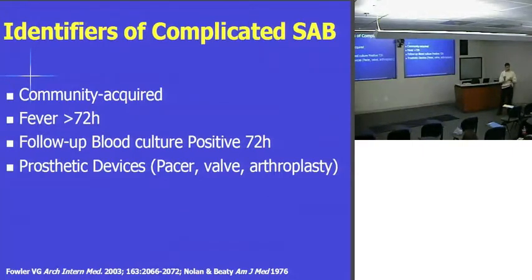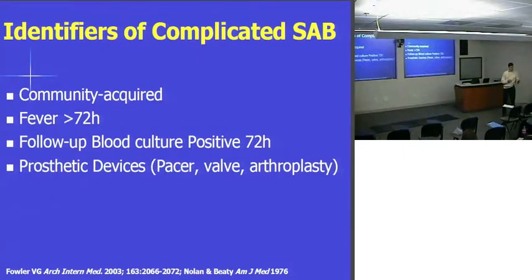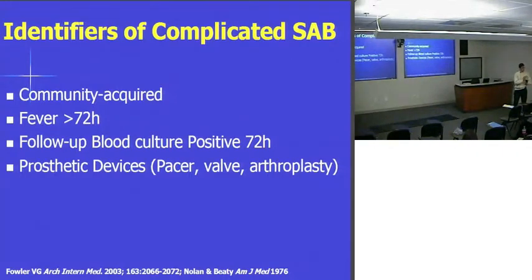If you have persistent bacteremia — you draw a blood culture at time zero and then two to four days later you draw it again and you have staph aureus again — that's a huge clue that you're missing something. It doesn't tell you where it is, but it tells you you've got to keep looking, adding additional diagnostic tests. And then devices. The use of prostheses in fields like cardiology and orthopedics have changed, improved, and extended the lives of countless thousands of patients. This intersection between prosthesis and infection is an ever-widening one for which there is no good therapy in contemporary medicine.